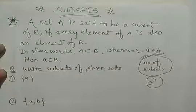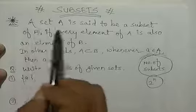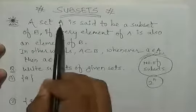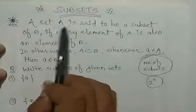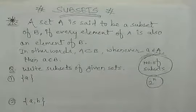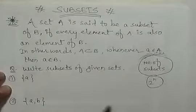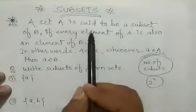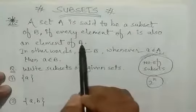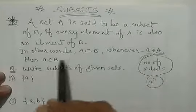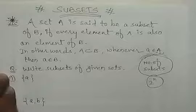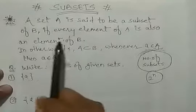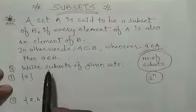Students, now we are discussing subsets. A set A is said to be a subset of B if every element of A is also an element of B. A set के अंदर जितने भी elements हैं, वो सभी elements अगर B set के अंदर हैं, तो A को B का एक subset कहेंगे. Subset से मतलब है एक छोटा set, मतलब किसी भी दिये हुए set का एक छोटा part. तो B set के अंदर क्योंकि A के सारे elements हैं, इसलिए A को B का एक subset कहेंगे.